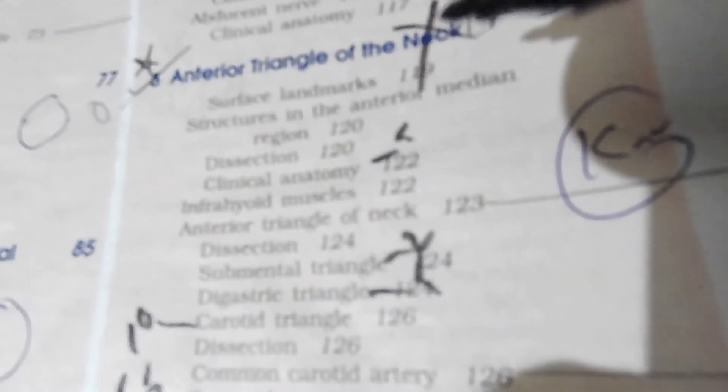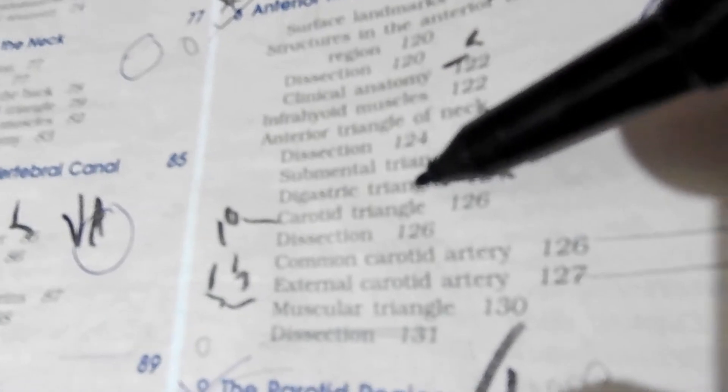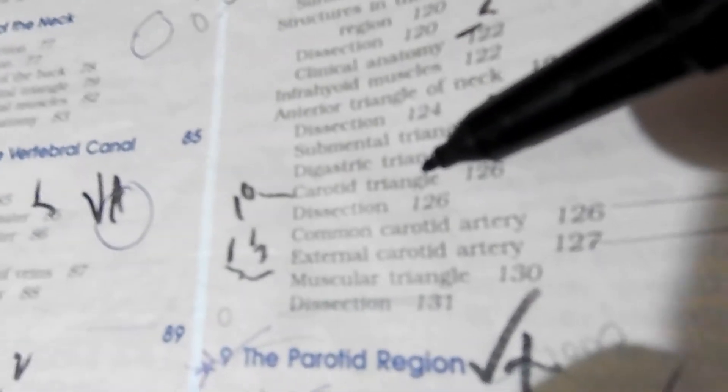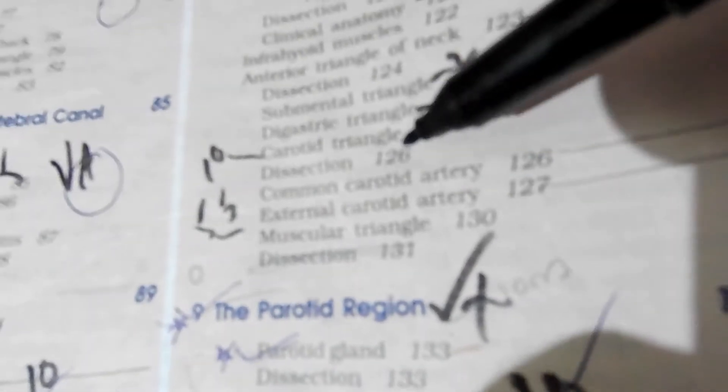Anterior triangle of the neck, everything suprahyoid and infrahyoid muscles, the submental digastric is for five or ten, mostly five marks. Carotid is for ten marks with carotid anastomosis. They can ask the common carotid, external and internal carotid arteries for five marks.